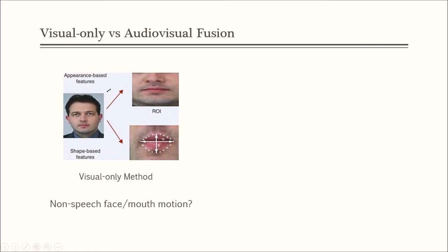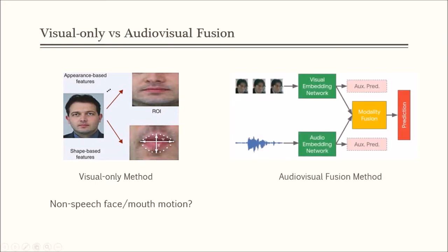Without audio information, we can imagine that these methods cannot handle the non-speech face or mouth motions. On the other hand, audio-visual fusion can improve the prediction accuracy because speech rhythm and word pronunciation are closely related to facial motion and mouth shape. For example, in this work, Joseph proposed an end-to-end multi-modal active speaker detection framework with a two-stream convolution network for audio-visual feature extraction followed by